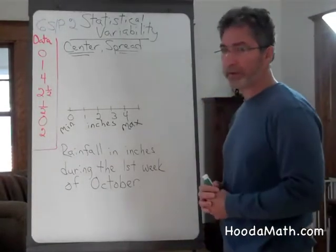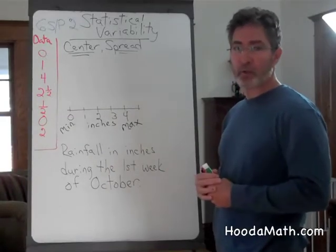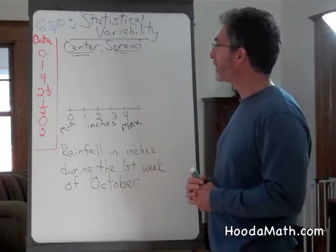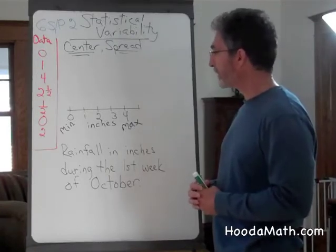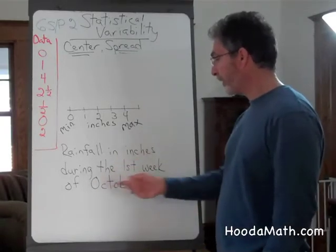Statistical variability is referring to how things change over time. In this particular case, we're talking about the amount of rain falling in inches during the first week of October.